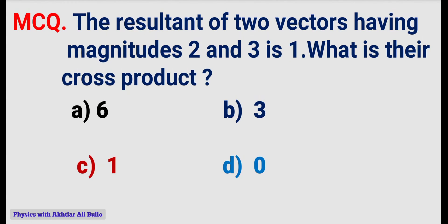The resultant of two vectors having magnitudes 2 and 3 is 1. What is their cross product? Options: a) 6, b) 3, c) 1, d) 0.